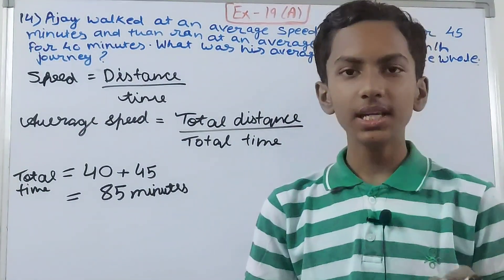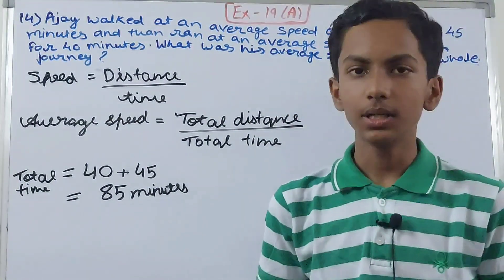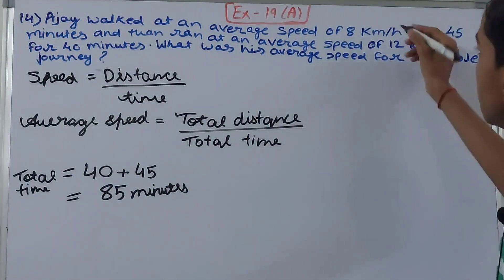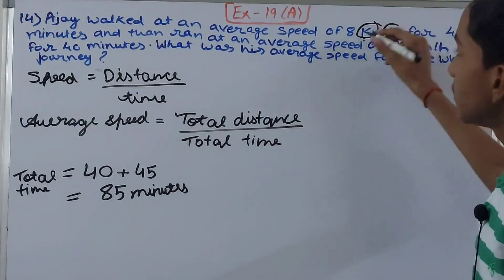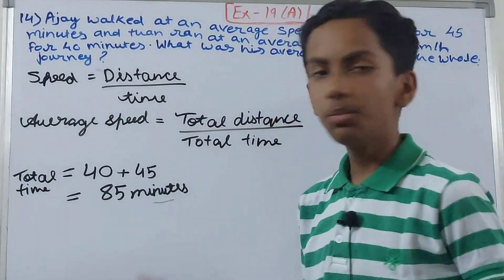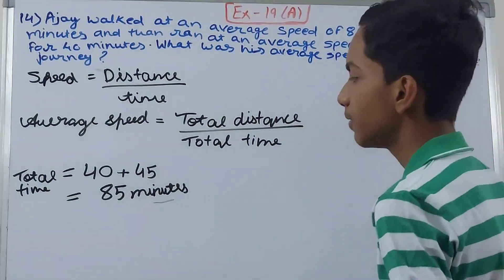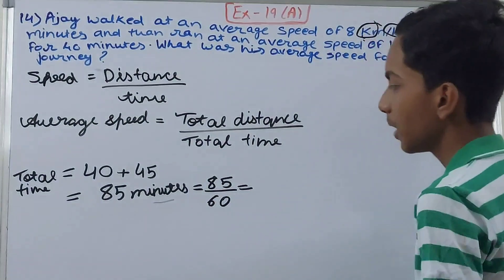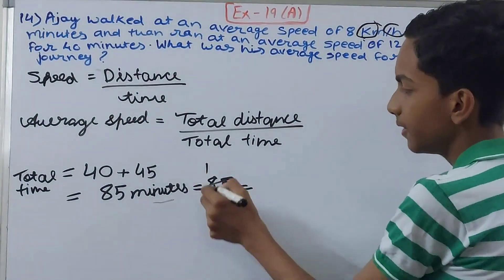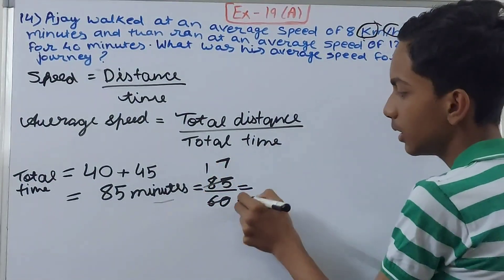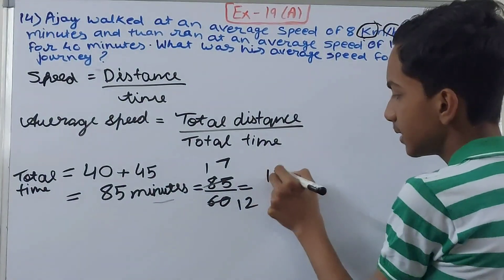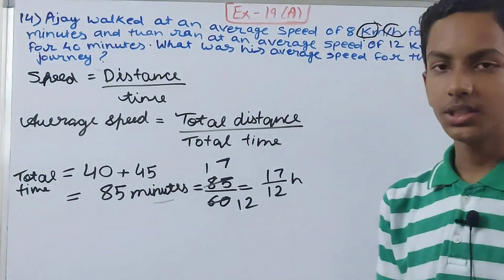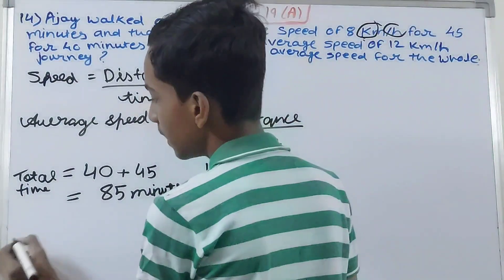The unit is very important here. Our distance will be in kilometers because the speed is in kilometers per hour, so the time must be converted to hours. 85 minutes becomes 85/60 hours. Canceling by 5 gives us 17/12 hours. This cannot be simplified further, and there is no need to convert it to a mixed fraction for now.